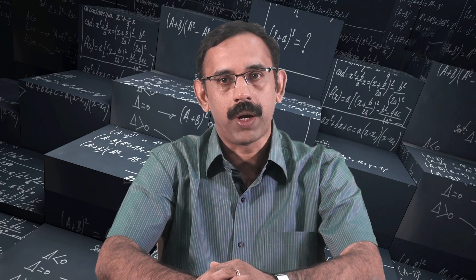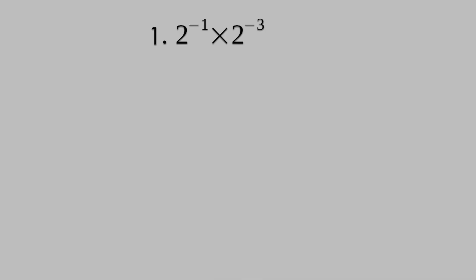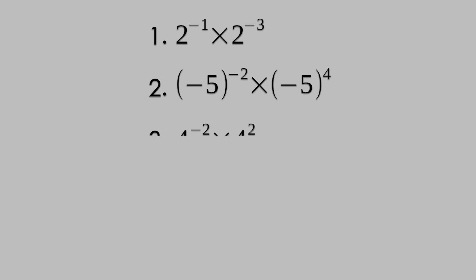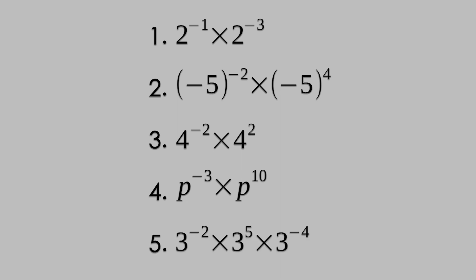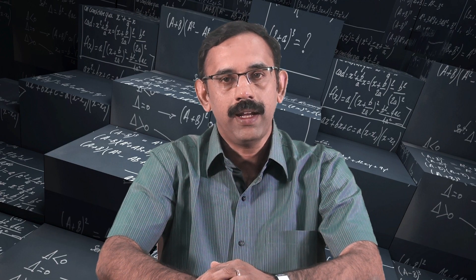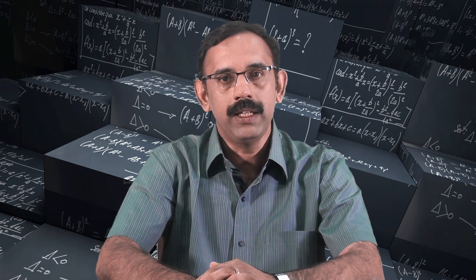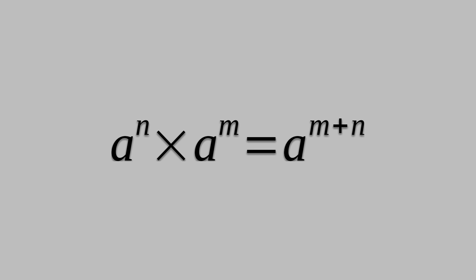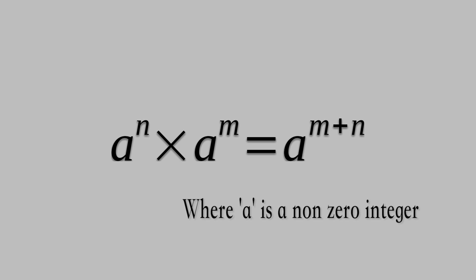You can try the following problems using the same method: 2 raised to minus 1 times 2 raised to minus 3; minus 5 raised to minus 2 times minus 5 raised to 4; 5 raised to minus 2 times minus 5 raised to 4; 4 raised to minus 2 times 4 squared; p raised to minus 3 times p raised to 10; and 3 raised to minus 2 times 3 raised to 5 times 3 raised to minus 4. From these problems we can conclude that for any integers m and n, a raised to n times a raised to m is equal to a raised to m plus n, where a is a non-zero integer.